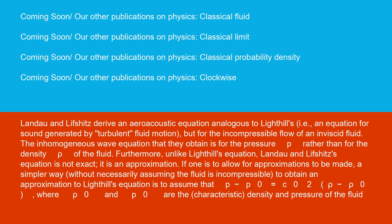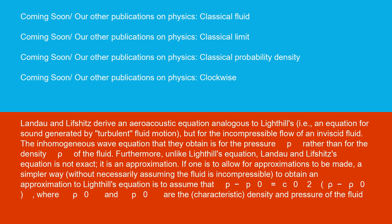If one is to allow for approximations to be made a simpler way without necessarily assuming the fluid is incompressible, to obtain an approximation to Lighthill's equation is to assume that p - p₀ = c₀²(ρ - ρ₀), where ρ₀ and p₀ are the characteristic density and pressure of the fluid. Then, upon substitution the assumed relation between pressure and density into the equation, we obtain the equation.